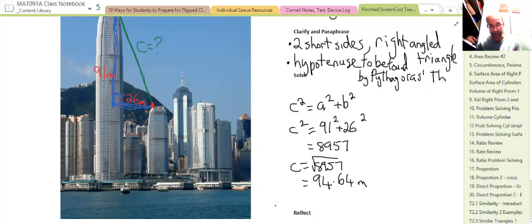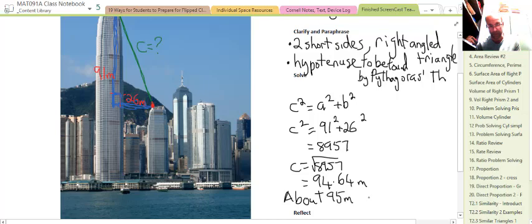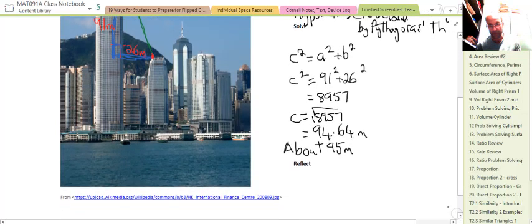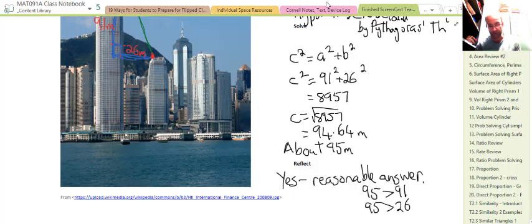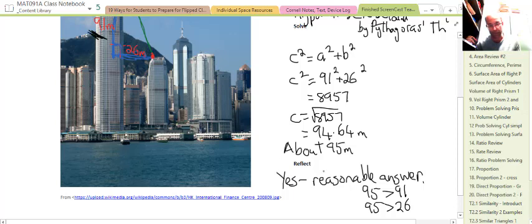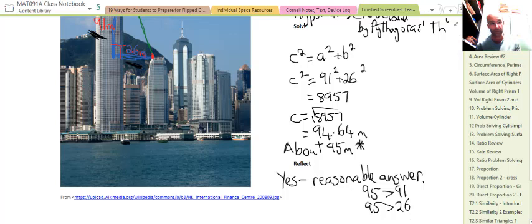Reflect: does the answer make sense? Does it seem reasonable? Yes it does. One thing that's reasonable about the answer of 95 is that it's bigger than 91, which is one of the shorter sides. 95 is bigger than 26, which is the other shorter side. It's a reasonable answer. And one other thing you could think about: he might need a bit more than 95 meters if he's needing to tie it down or something else. So certainly 95 at least. That's how much cable Batman needs.